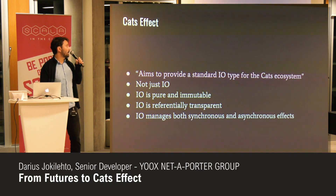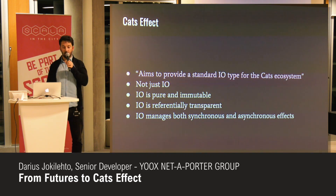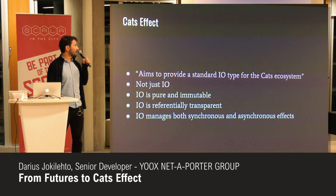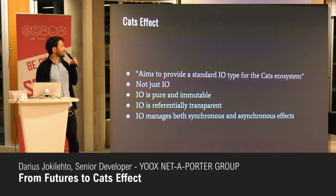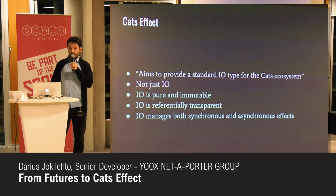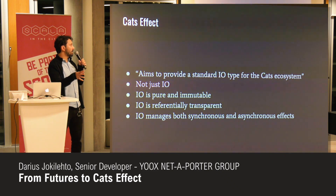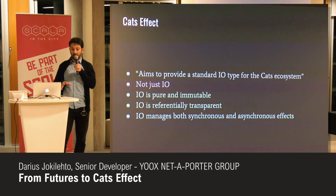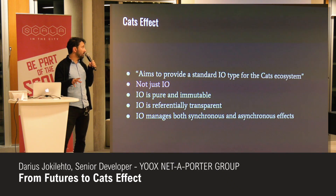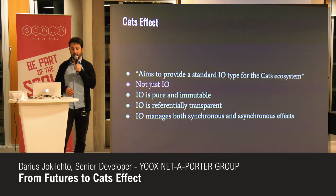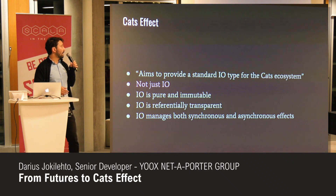A few words about what Cats Effect is: Cats Effect was born a little later than Cats was, it is a separate library, but it lives in the same ecosystem. The mission statement is that it aims to provide a standard IO type for the Cats ecosystem. IO suspends side effects and operations in general, so you can run them when you want — they're lazy. There are actually a number of type classes in Cats Effect; IO is one of them and is a pretty good entry point. It implements the other type classes, is purely functional, and is referentially transparent.